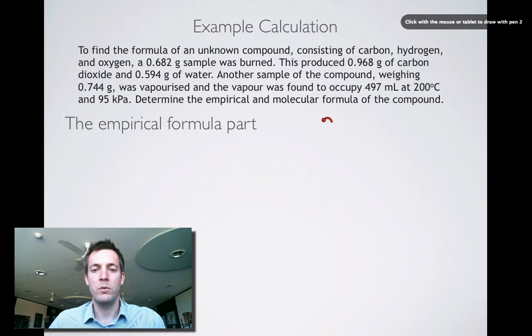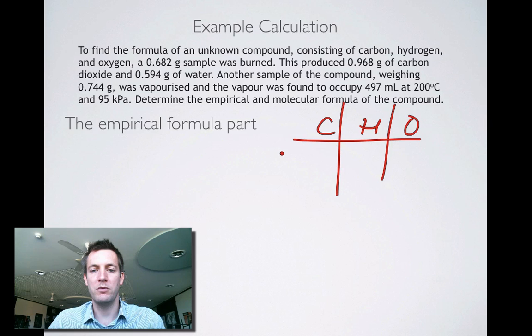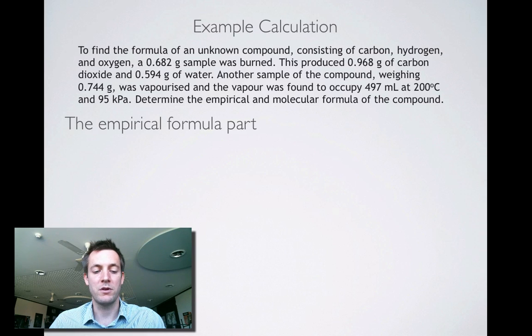Now, the empirical formula part, just remember, we are always trying to get a number of moles and then turn that into a ratio and then plug those numbers into a formula. And that is exactly what we're going to do here, but what we're going to have to do is use the carbon dioxide and the water to find the number of moles of carbon and hydrogen. So let's just go ahead and do that.